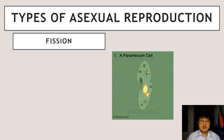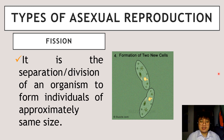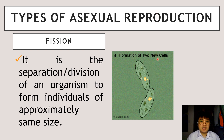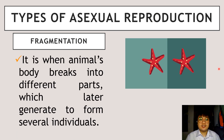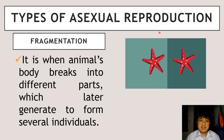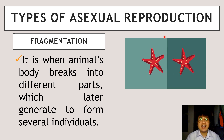The second type of asexual reproduction is fission. Fission is the process of separation or division of an organism to form individuals of approximately the same size. The parent organism will split or separate to create an offspring, as you can see in the paramecium example on this illustration. In fragmentation, an animal's body breaks into different parts which later generate to form several individuals. A very good example is the starfish, wherein offspring come from pieces of the parent that break off and develop into separate organisms.